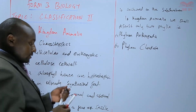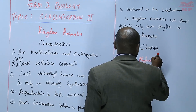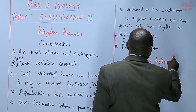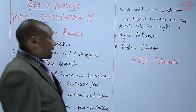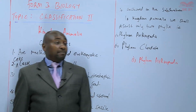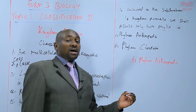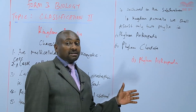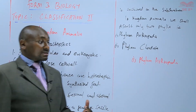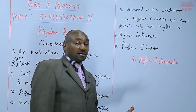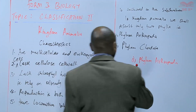Starting with number one: Phylum Arthropoda. This is the phylum that consists of the arthropods. The arthropods can either be arachnids like spiders and mites, we can also have the Insecta where we have the insects, and the crustaceans like the crabs. All those are members of Phylum Arthropoda. So first of all, we look at the characteristics.